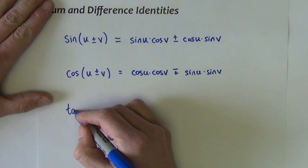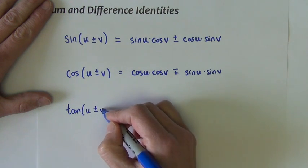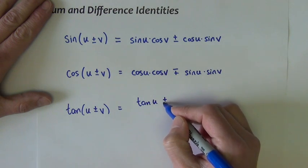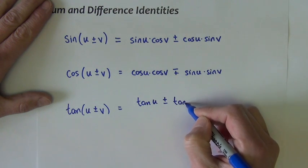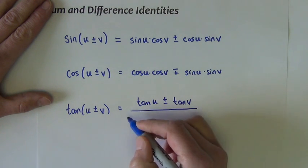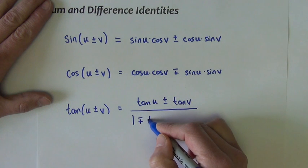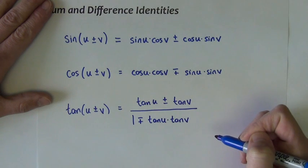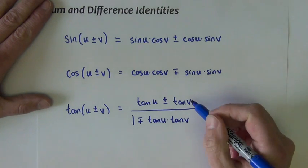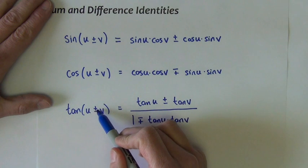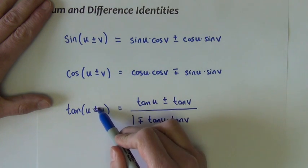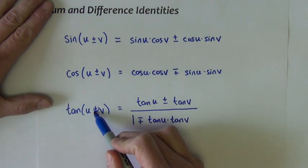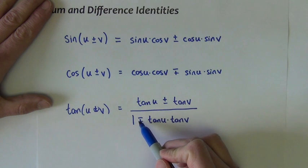Final one is for tangent. It is tangent of u plus or minus tangent of v divided by 1 minus plus tangent of u times tangent of v. Notice again, the plus and minus signs. The sign on top here, the plus, we expand with plus on top, minus on bottom. And if it is minus, we expand with minus on top, plus on bottom.